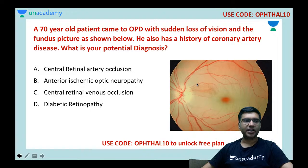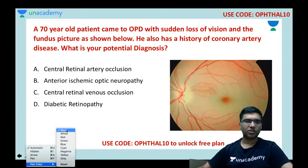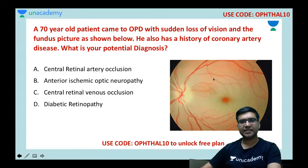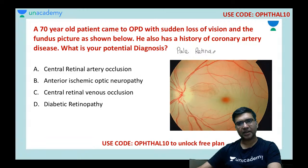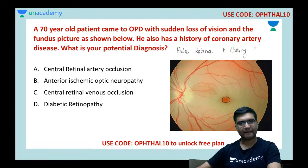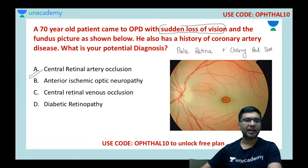A 70-year-old patient with coronary artery disease presents with sudden loss of vision. The fundus picture shows a pale retina with a reddish spot at the center of the macula — this is called a cherry red spot. Whenever you see a cherry red spot with loss of vision, this patient may be having central retinal artery occlusion (CRAO).